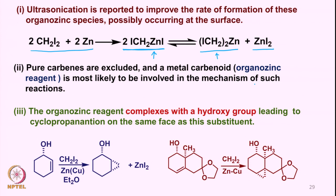It has been found that these reagents react with allylic alcohols where the OH group has a specific stereochemistry — for example alpha — and cyclopropanation takes place from the same side as the OH group, suggesting chelation. Not only allylic alcohols, but even homoallylic alcohols with an alpha hydroxy group direct cyclopropanation to the alpha face as well, indicating some Lewis acidic chelation involving zinc.